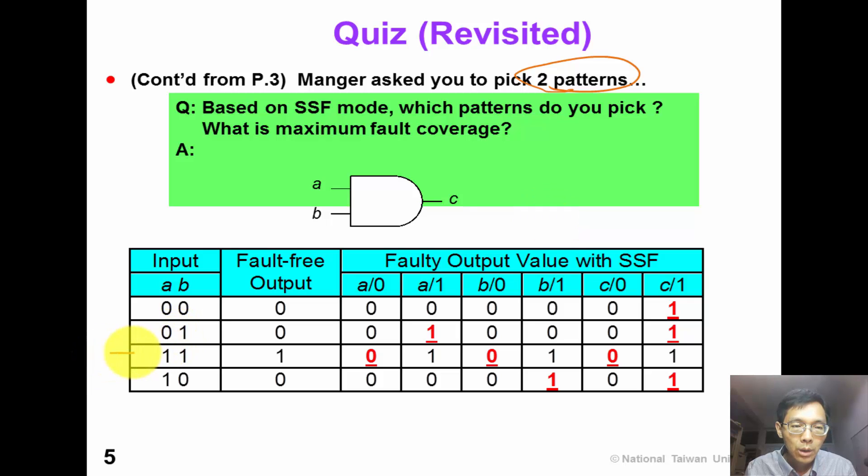Yes, you can pick 1-1 and 0-1. So the test set would be 1-1, 0-1. And the fault coverage is 1, 2, 3, 4, 5. Five detected faults over 6 faults, which is much better than our previous choice.